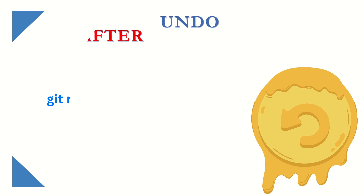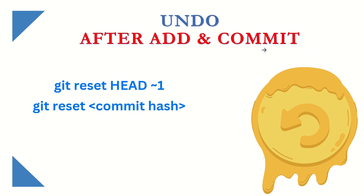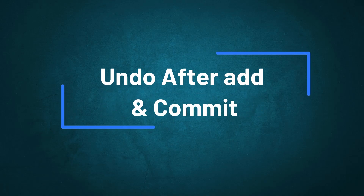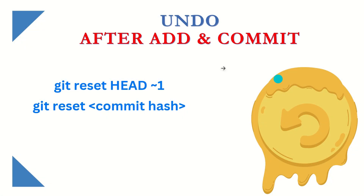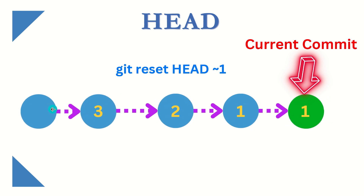What if we have staged the changes and committed them as well? We can still do something. Simply run git reset and then there's a concept called HEAD. HEAD is not just a keyword — it's a complete concept. Let's understand it: imagine circles as your commits in a branch, starting from the left. The green circle means you are currently at that commit.